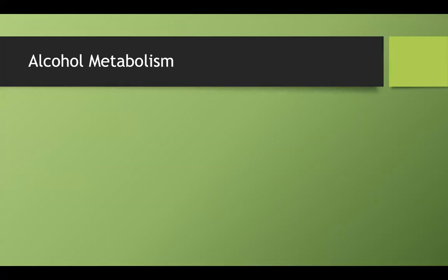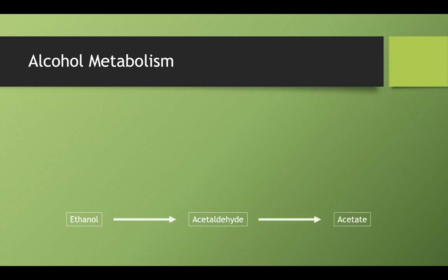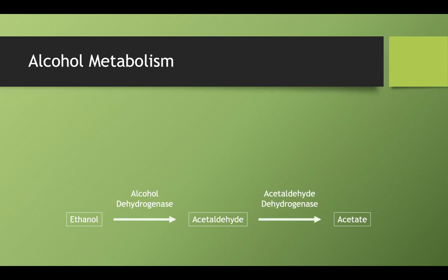Let's draw this in a diagram. Ethanol is degraded to acetaldehyde, and that's further degraded into acetate — that's how we metabolize alcohol. There are two enzymes in this pathway: alcohol dehydrogenase converts ethanol to acetaldehyde, and acetaldehyde dehydrogenase converts acetaldehyde to acetate.